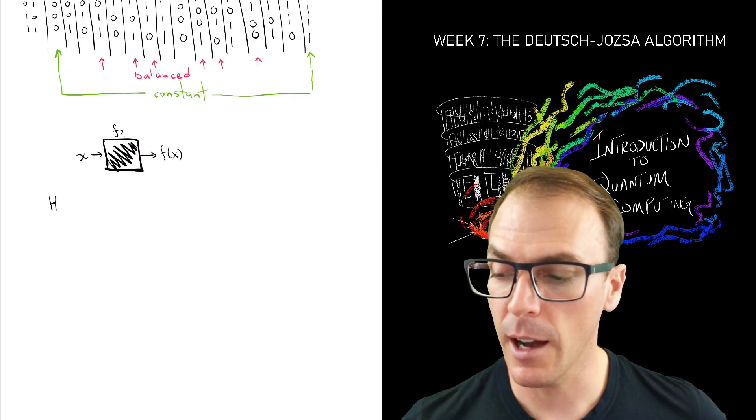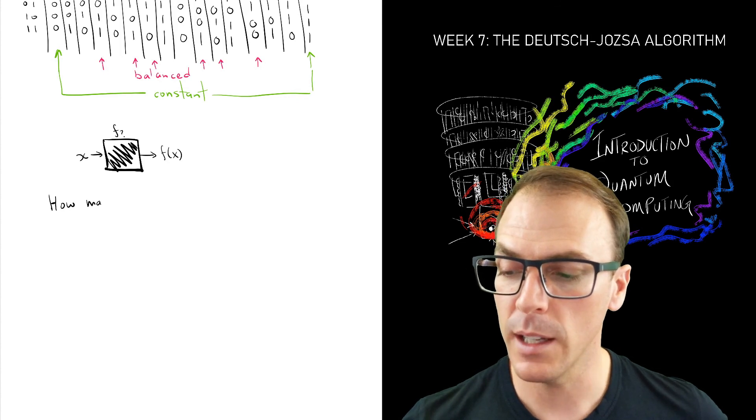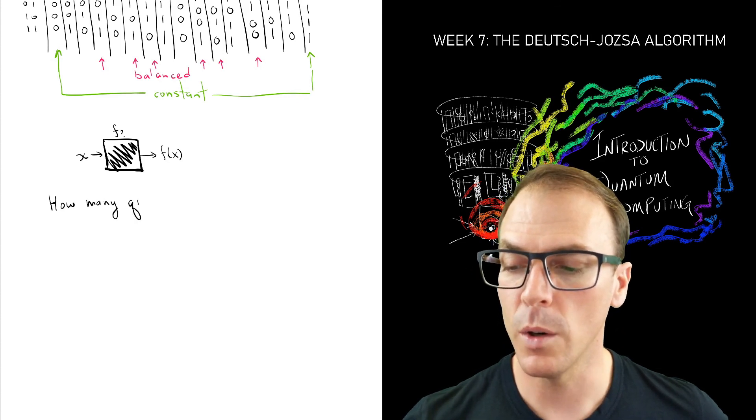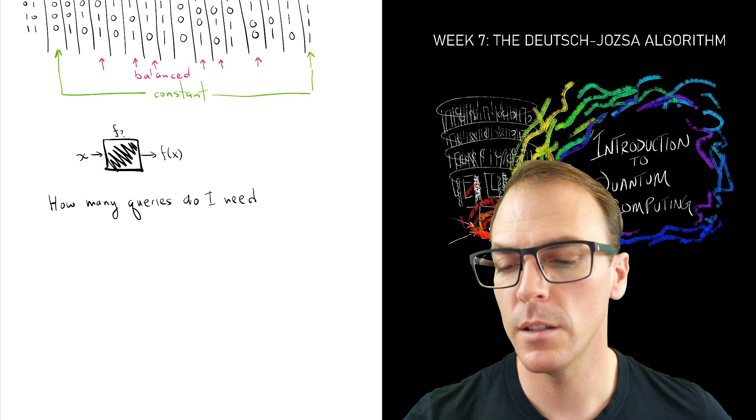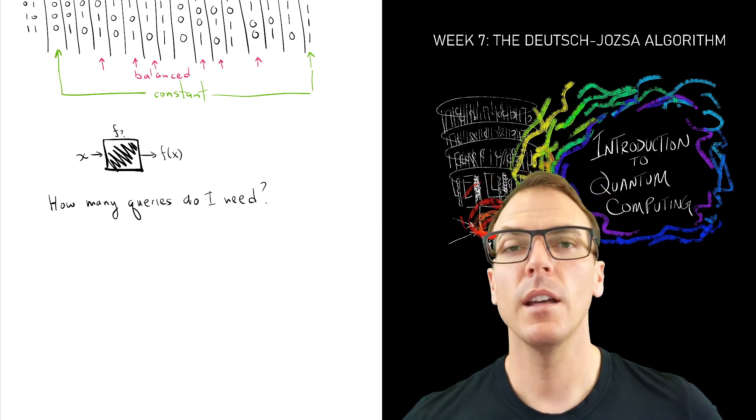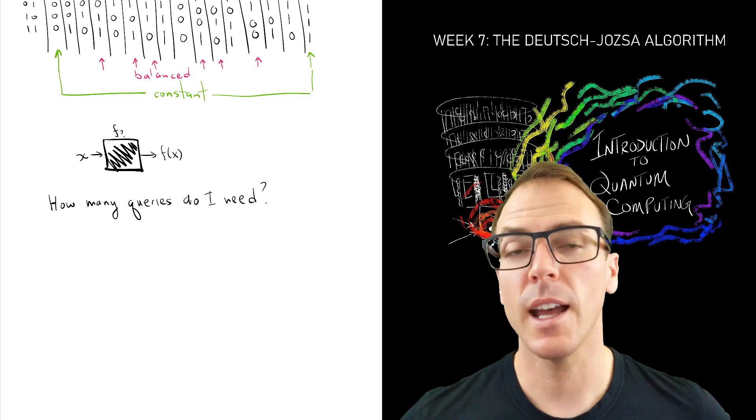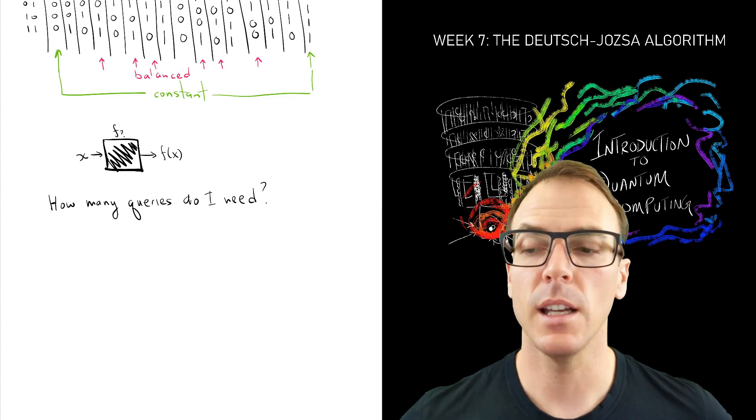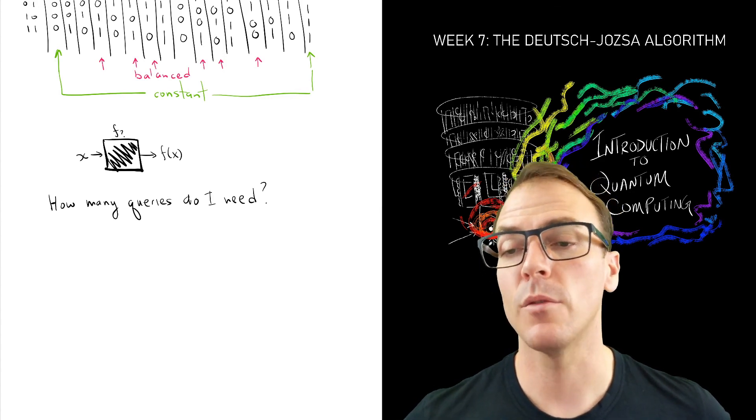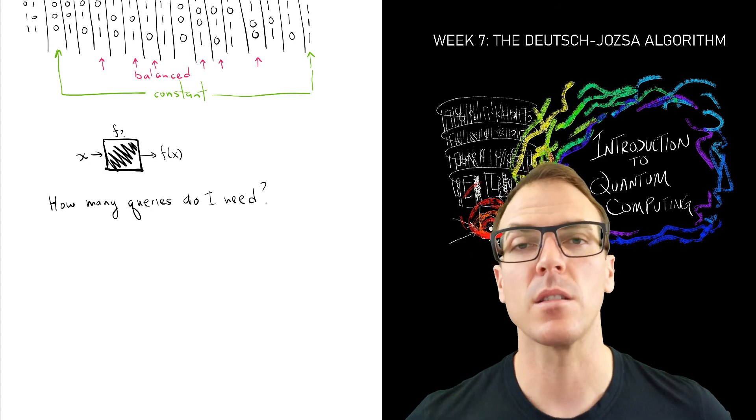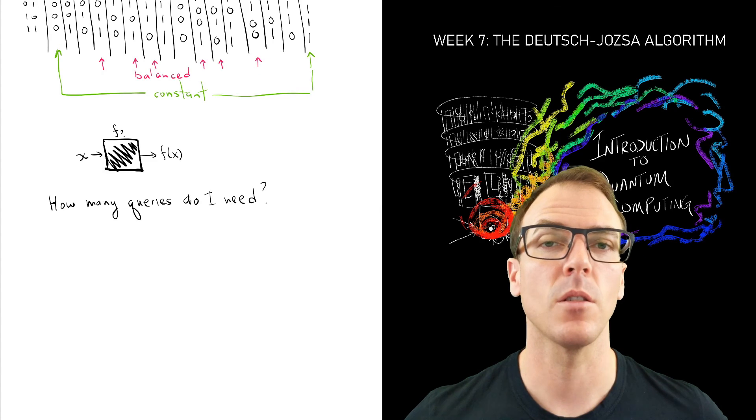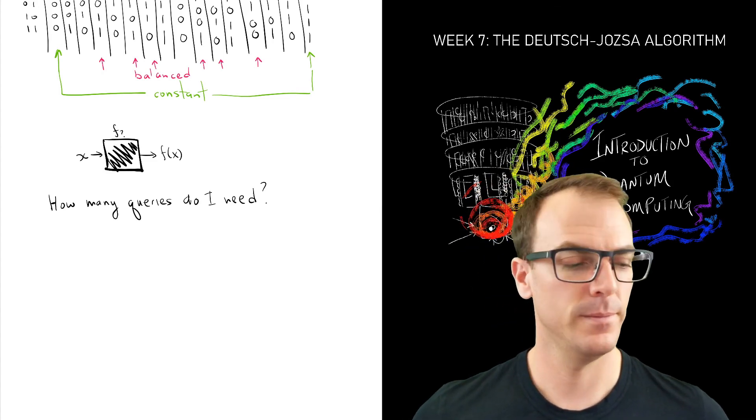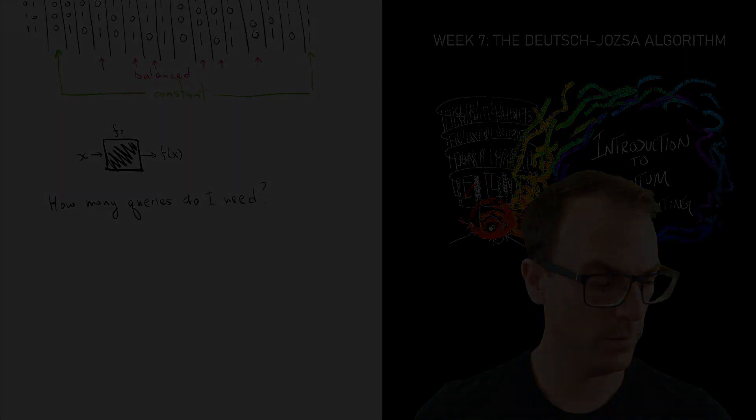Okay. And in the next video, we're going to look at classically how many queries we need for these black boxes in order to determine whether the function implemented by the box is balanced or constant. Okay. Let's go.